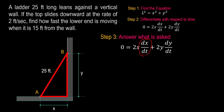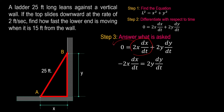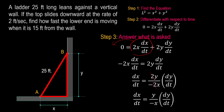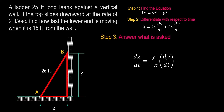Taking the equation from step two, we solve for dx/dt. Transposing the X term to the left side, we have negative 2X times dx/dt equals 2Y times dy/dt. Dividing both sides by negative two and simplifying, we get: dx/dt equals negative Y over X, multiplied by dy/dt. In order to solve this, we need the value of Y, the value of X, and the value of dy/dt — the rate of change of Y with respect to time.